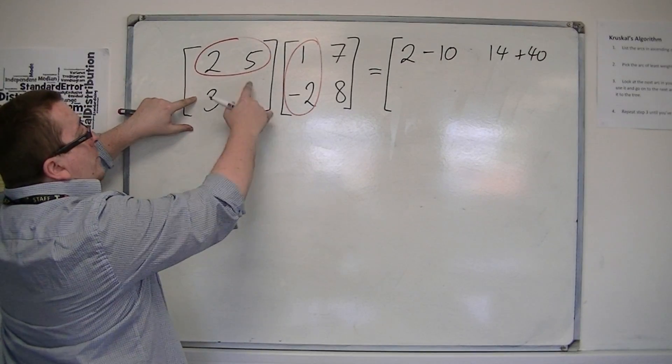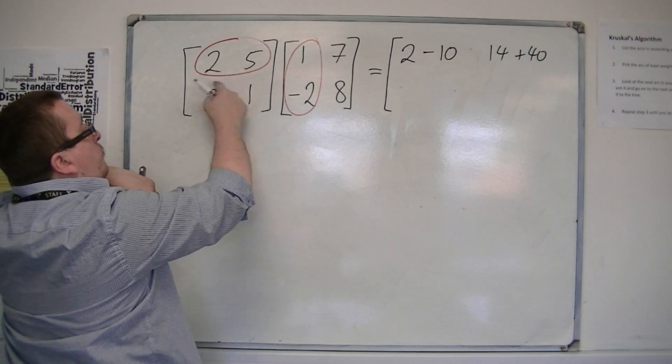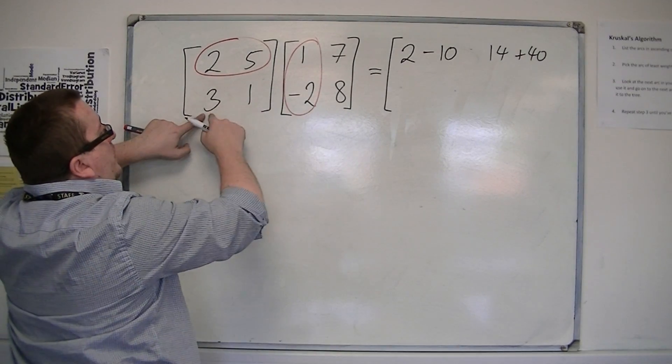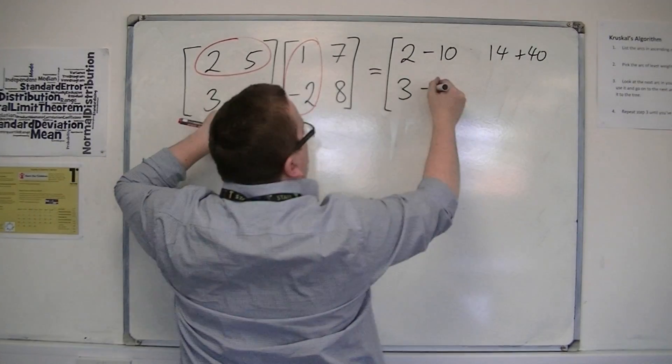Then we drop down a row, because we've done that row by both of the columns. So we're now going to do this row by both of the columns. So 3 times 1 is 3, and 1 times minus 2 is minus 2.